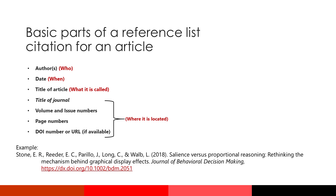What you will need to do is identify the information that will fit into these four categories. For a journal article, the name of the author or authors fits into the Who category. The publication date answers the When question. The information about the title tells the reader what the work is called. The Where category will be filled with the name of the journal, the volume and issue numbers, the page numbers, and the DOI number or URL. Put it all together and it looks like the example here.